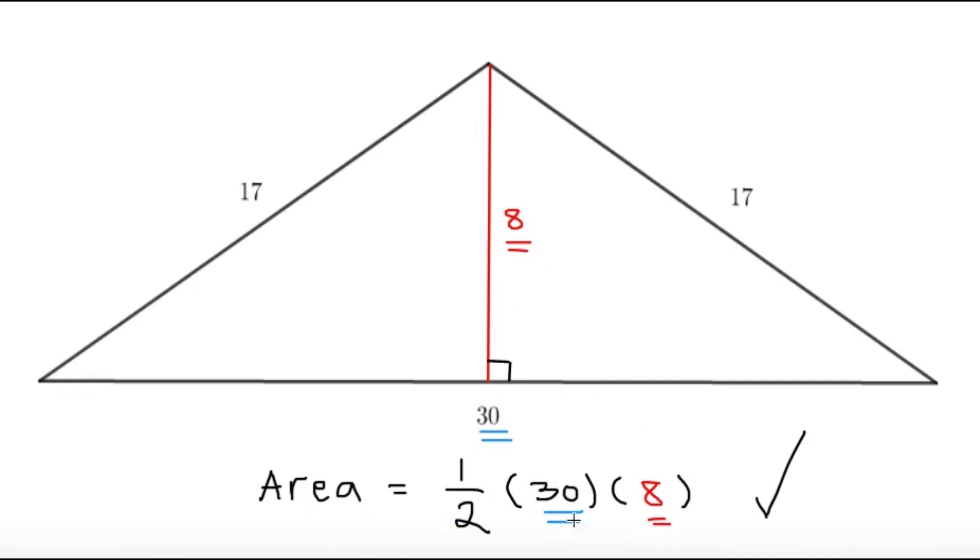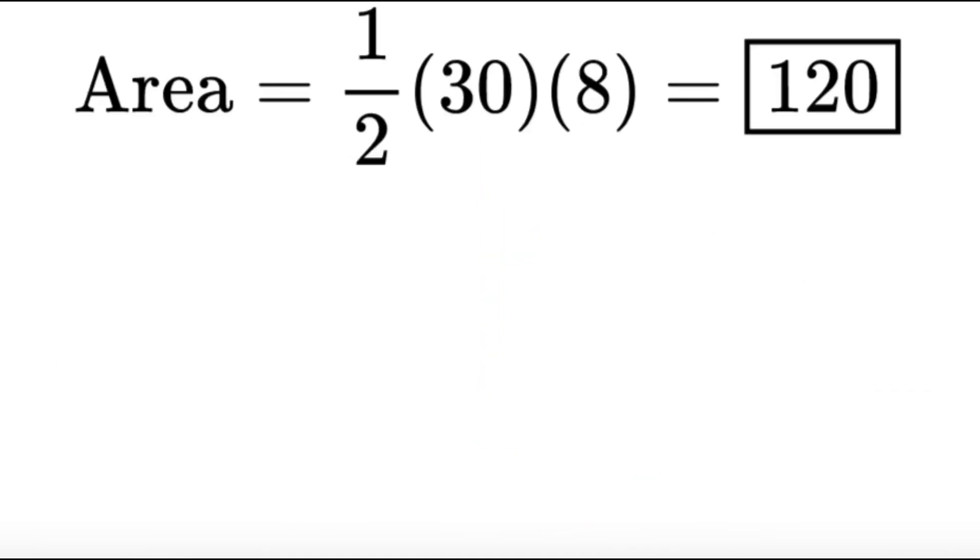So we have one-half times 30 times 8. All we have to do is multiply everything out. We get that the area equals one-half times 30 times 8. We can cancel, so 15 times 8, the answer is 120.